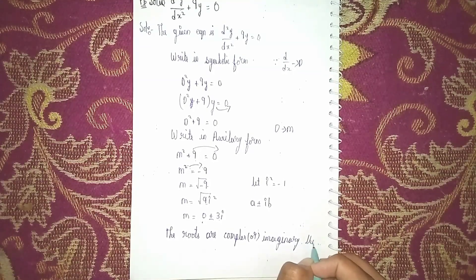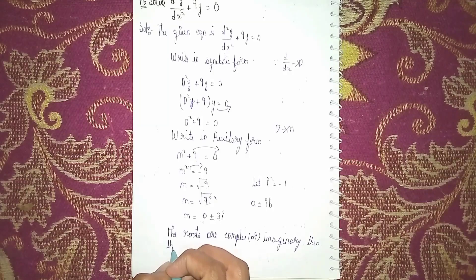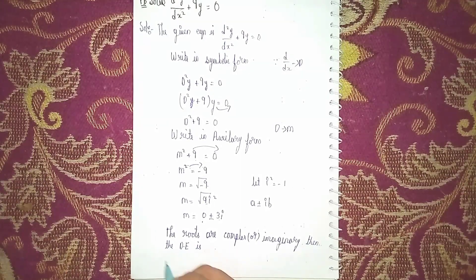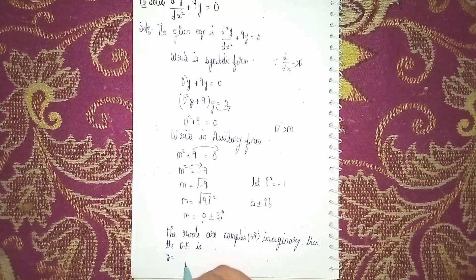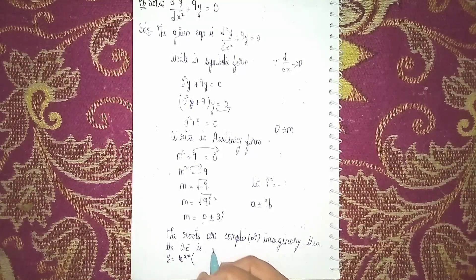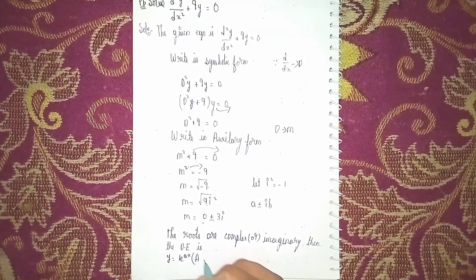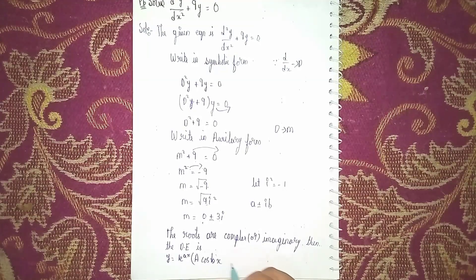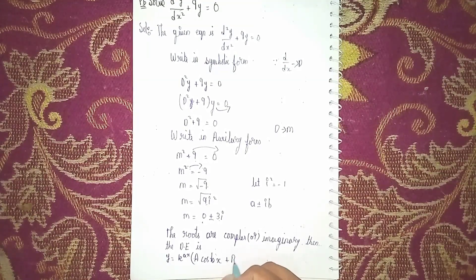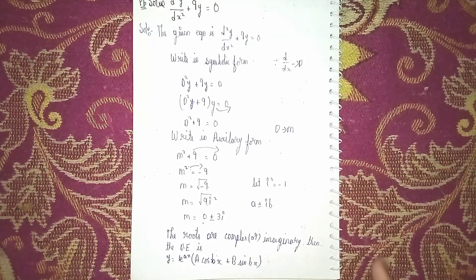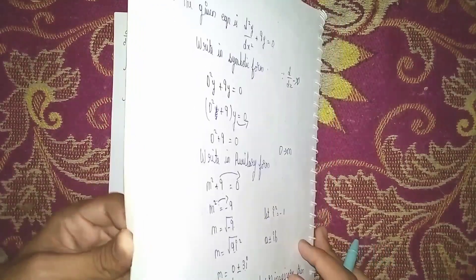Then the differential equation is y = e^(ax) × [a·cos(bx) + b·sin(bx)]. I am writing here.